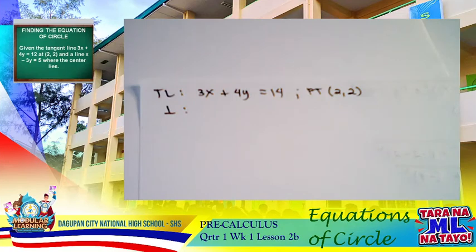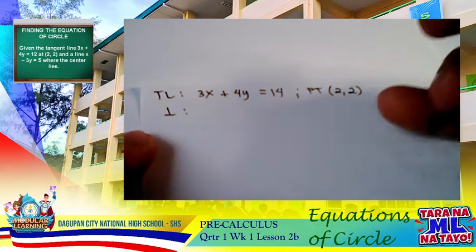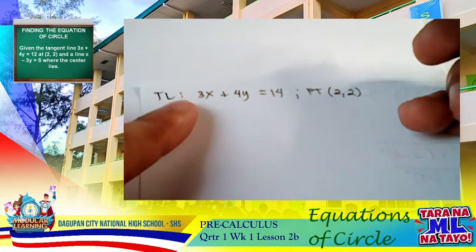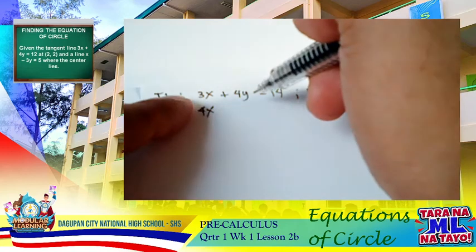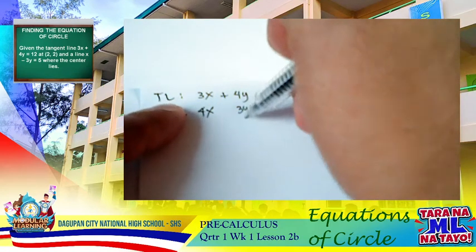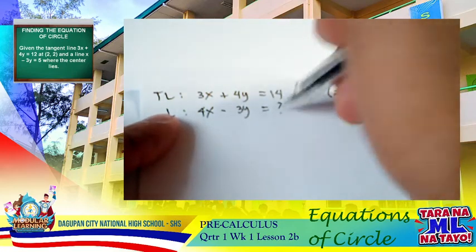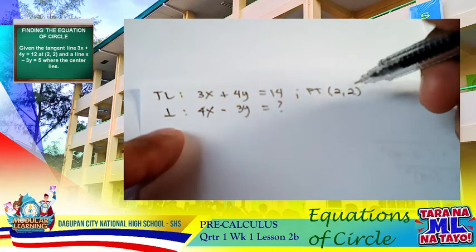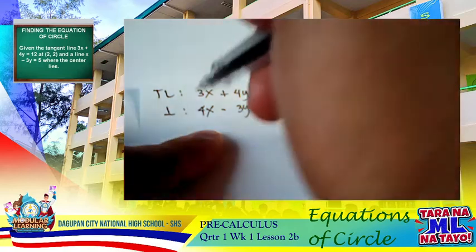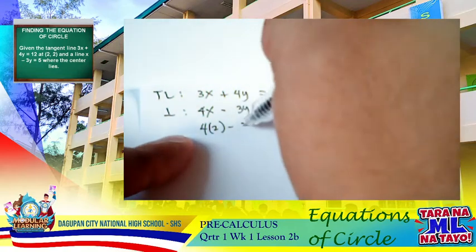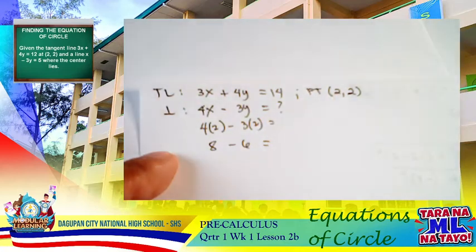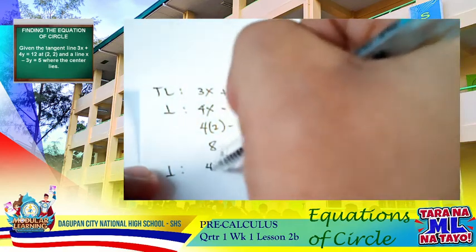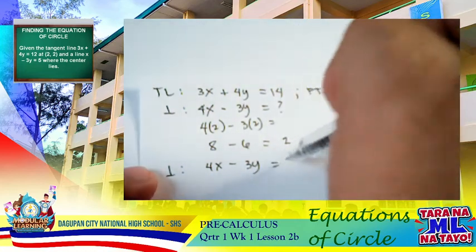From the tangent line 3x plus 4y equals 12, to get the perpendicular line we interchange the numerical coefficients of x and y, giving us 4x, and then the coefficient of y becomes 3y with an opposite sign, so 4x minus 3y. To find the constant, we substitute the point of tangency (2, 2): 4 times 2 minus 3 times 2 equals 8 minus 6 equals 2. So our perpendicular line is 4x minus 3y equals 2.